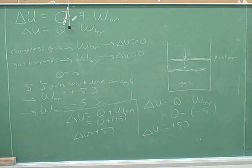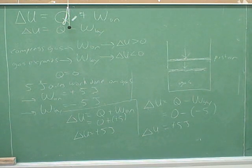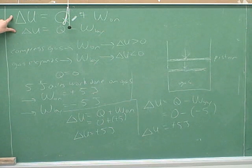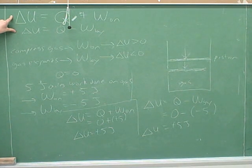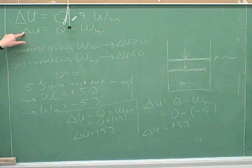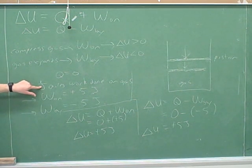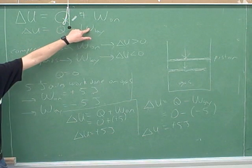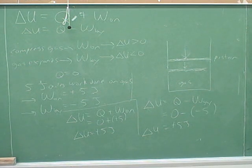The reason we're going over this is that it's very commonly done in textbooks and in class. Very often they just choose one of these equations and do all the problems with that one equation. So if your professor really likes this equation, they would use it even when work is really being done on the gas — they would just plug in a negative number for W by. This is actually the way it's usually done.